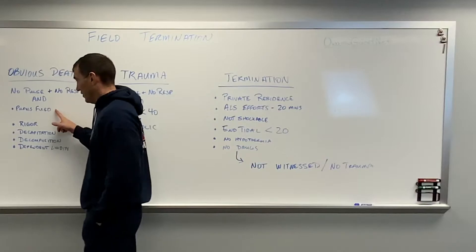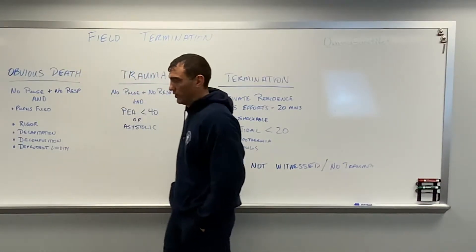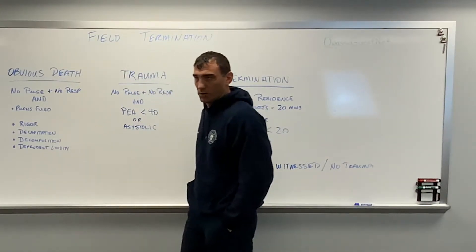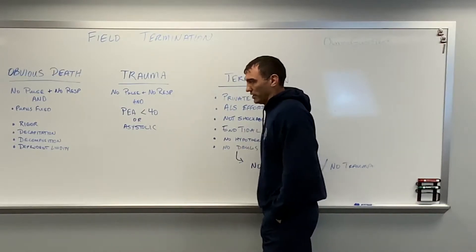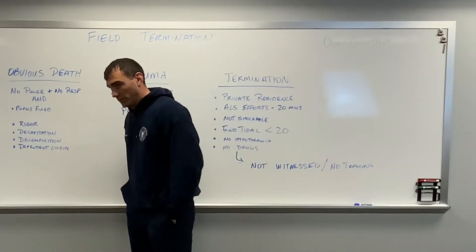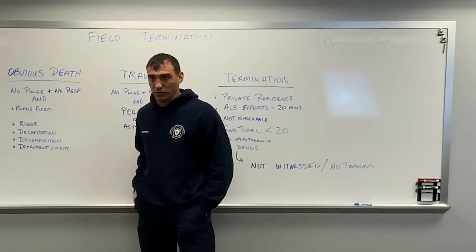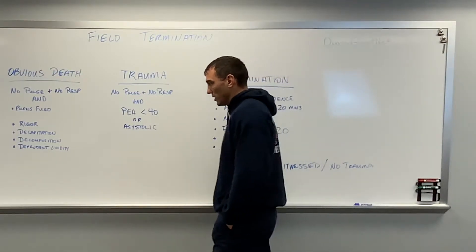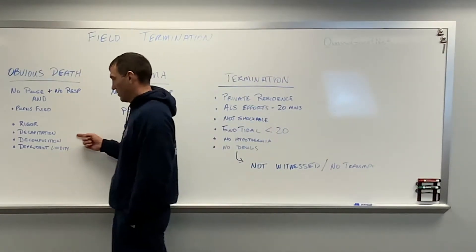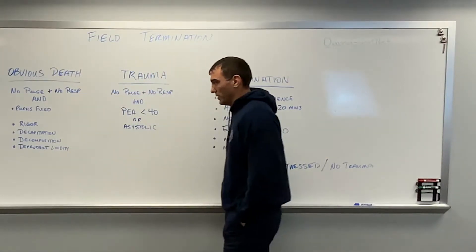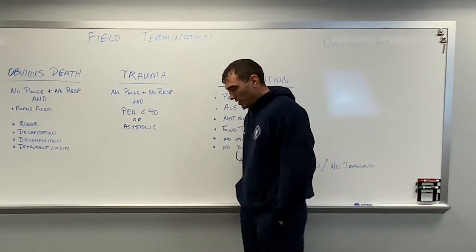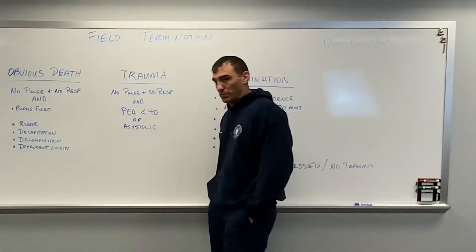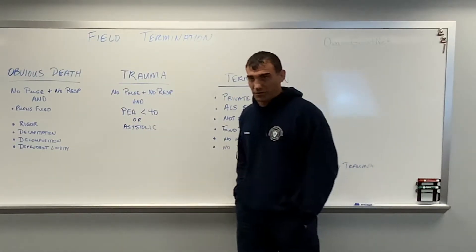We need those two things always — obvious death indicators — plus one of four additional signs. So: no pulse, no respirations, fixed pupils, and they have rigor, which is probably the most common. They can also have decapitation, decomposition, or dependent lividity. Rigor and dependent lividity are the two most common we run into. Decapitation can be confusing for people.